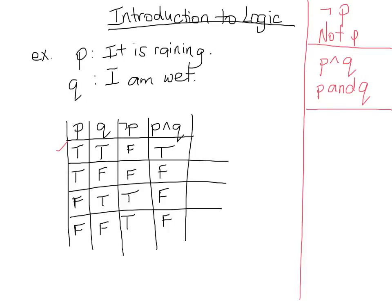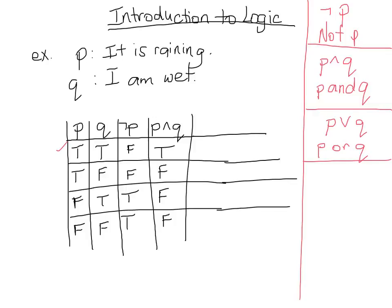The next symbol is the OR symbol, which looks like a V — P or Q. For P or Q to be true, at least one must be true. In the first row both are true, so it's true. In the second row P is true, so at least one is true. In the third row Q is true, so at least one is still true. In the final row they're both false, so P or Q must be false.